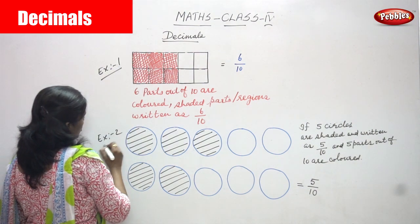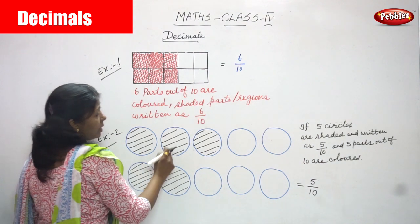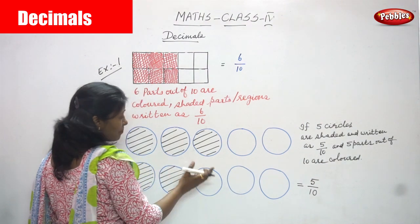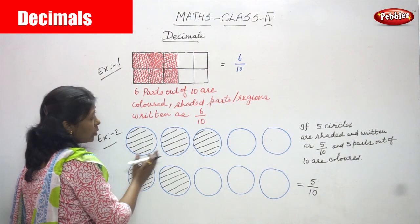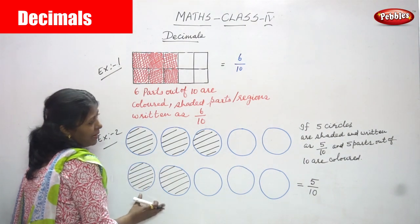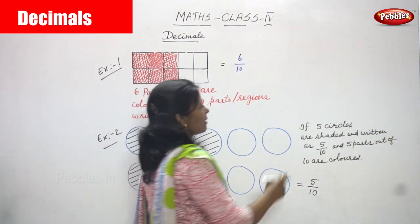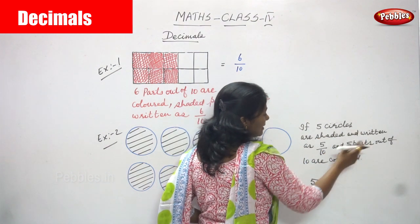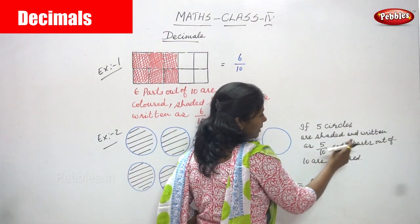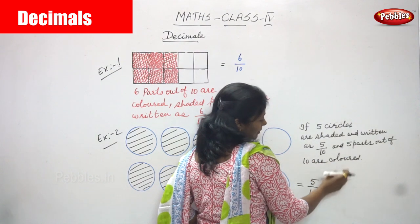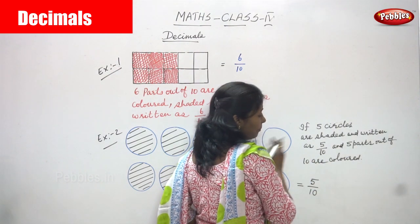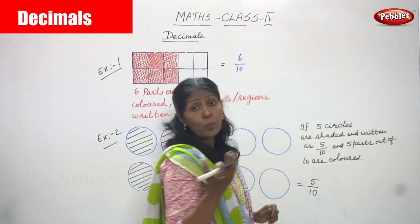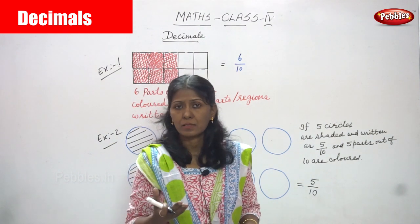This is Example 2. I have drawn 10 circles. From these 10 circles, I shaded only 5 parts. If 5 circles are shaded, it is written as 5 by 10, and 5 parts out of 10 are colored in black.